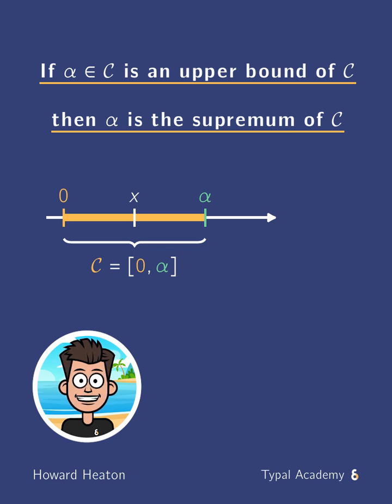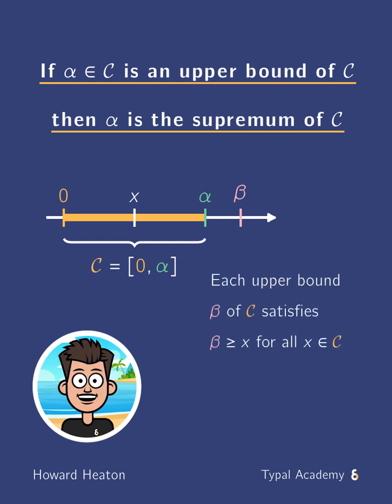So let's break down what it means for some beta to be an upper bound of C. An example beta is shown on the number line to the right of alpha. And we say that beta is an upper bound of C, provided beta is greater than or equal to x for all x in C. And an example x is shown between zero and alpha.